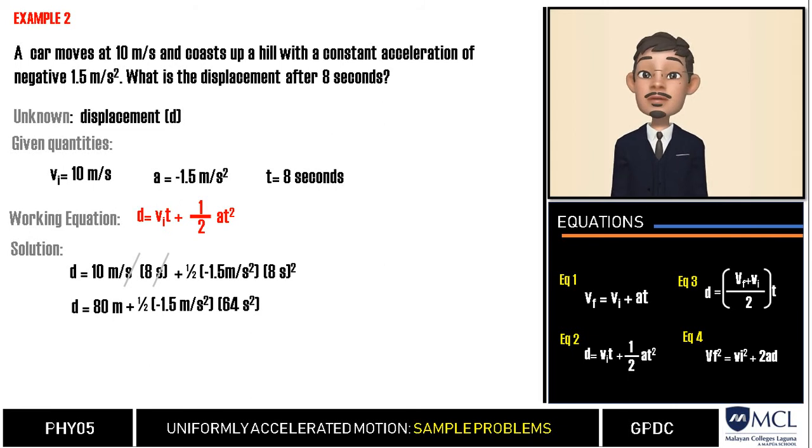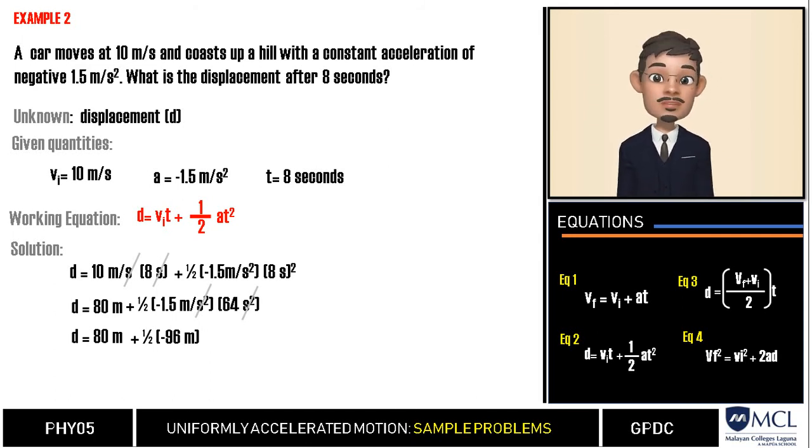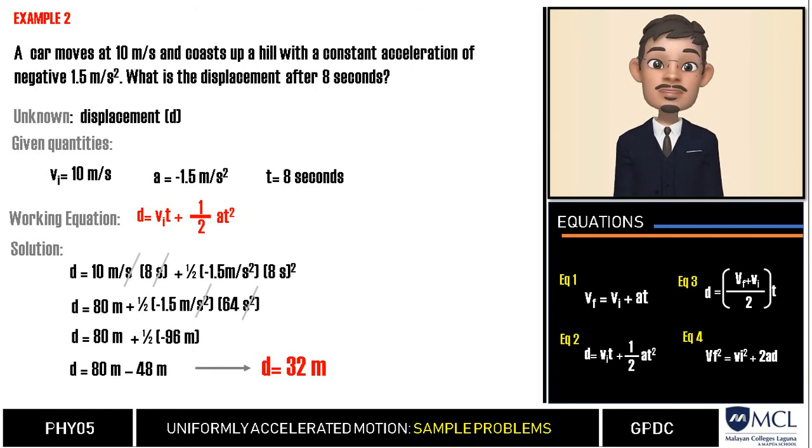In this case, we will have negative 96 meters after we cancel the units second squared. Now, one-half times negative 96 meters is negative 48 meters. And therefore, our equation will be 80 meters minus 48 meters, where the difference is 32 meters. Therefore, the displacement of the car going up a hill is 32 meters.